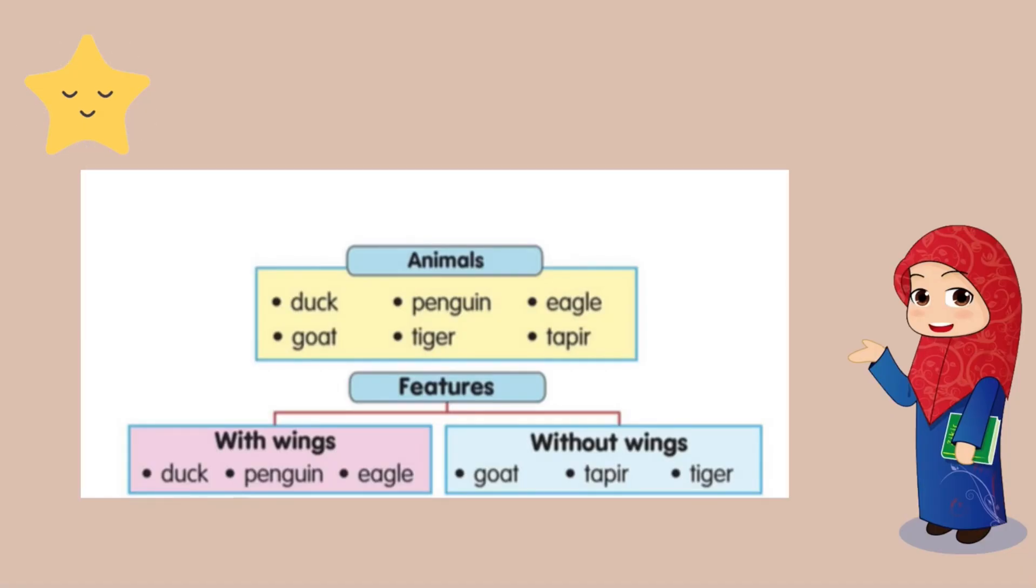Now look at the tables. So these are the features for the animals. The animals with wings are duck, penguin, and eagle, and the animals without wings are goat, tapir, and tiger.